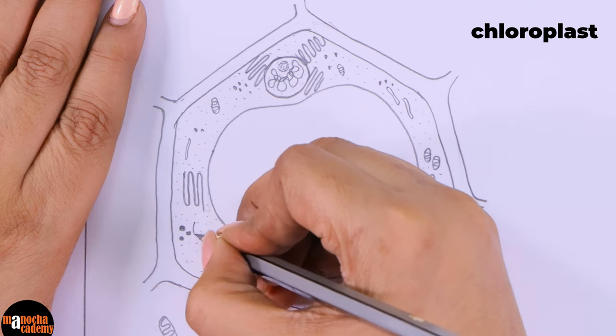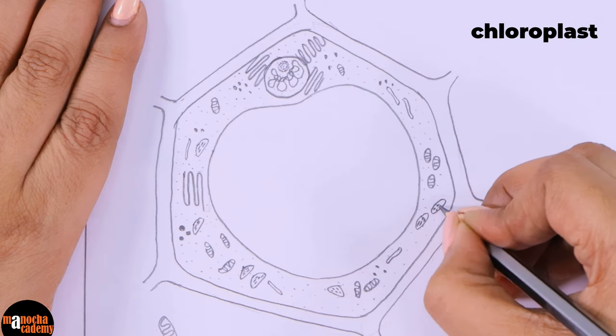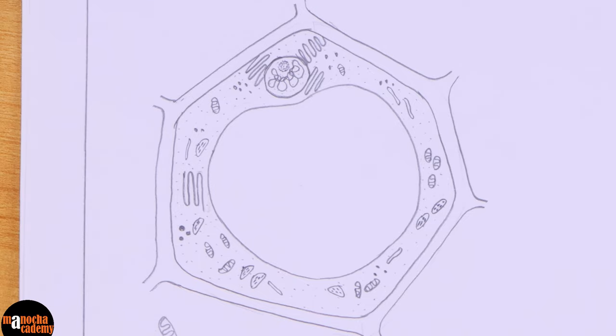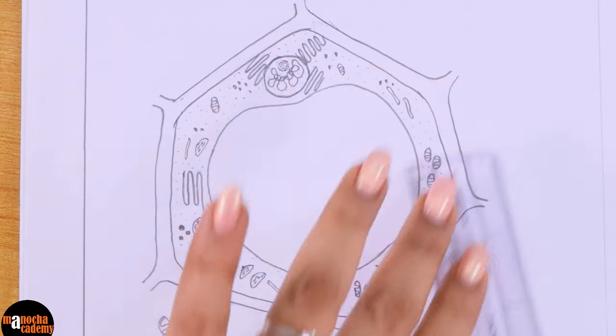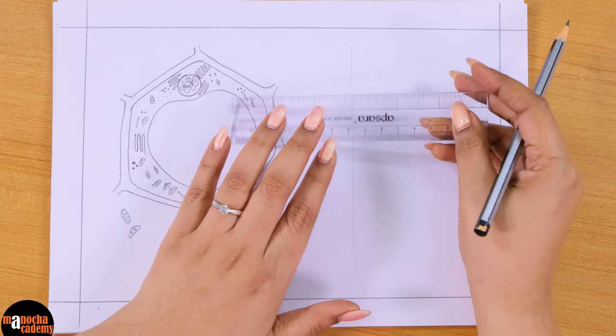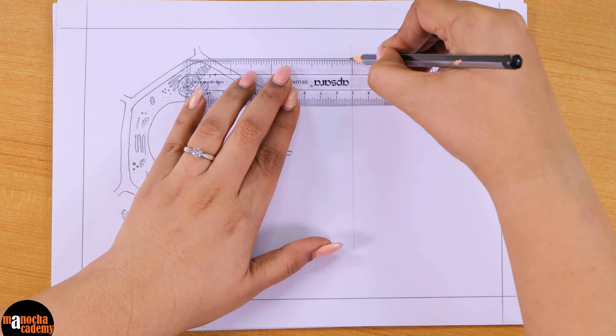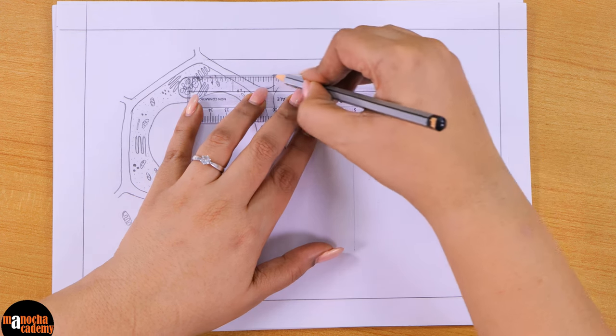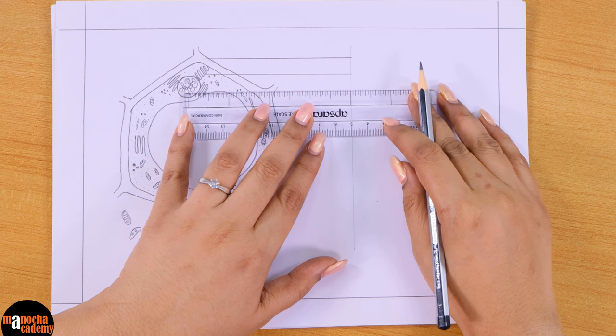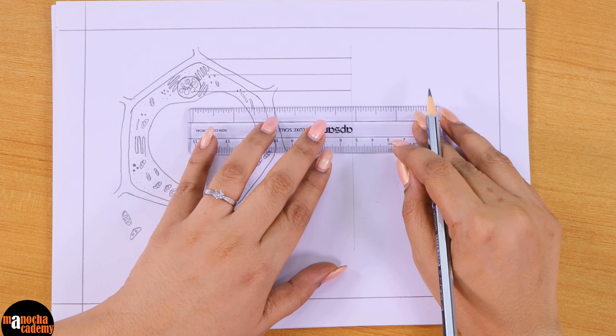All right, so that is the diagram done. Now we are going to label it. So for labeling, as always, I will take a reference. I will draw a line here. We will start with the cell wall. Keep the lines, draw the lines with ruler, keep the lines parallel to each other, and make sure that there are no lines crisscrossing each other.